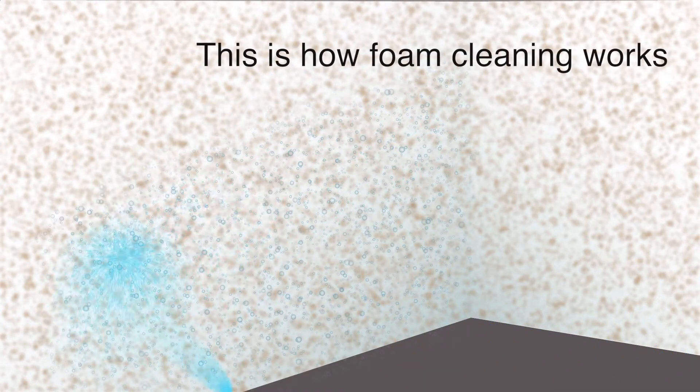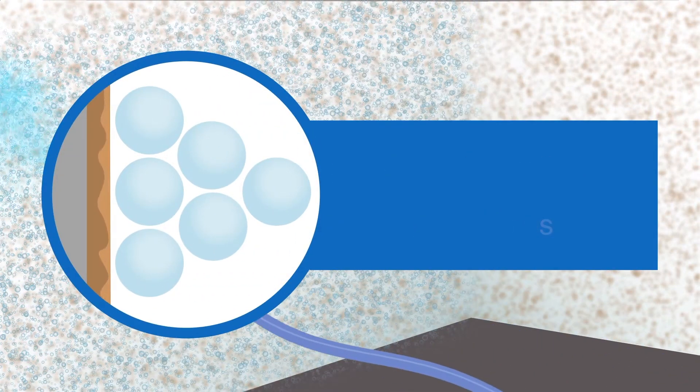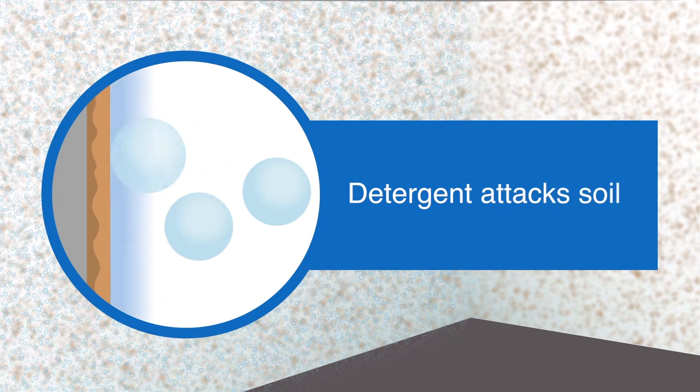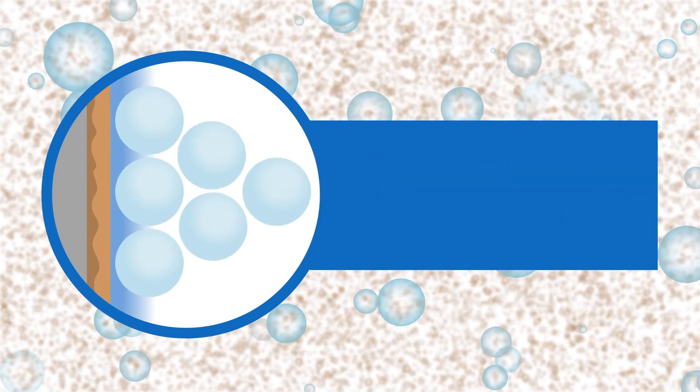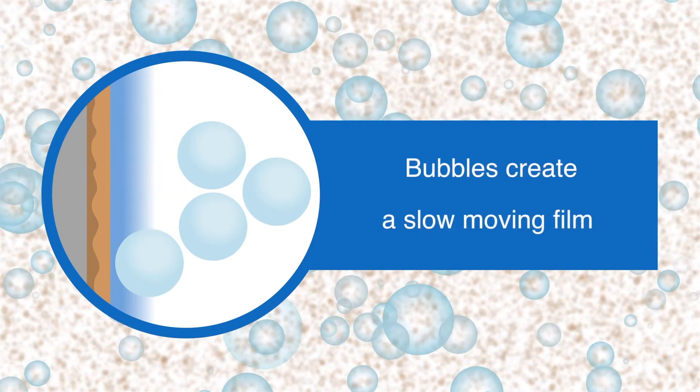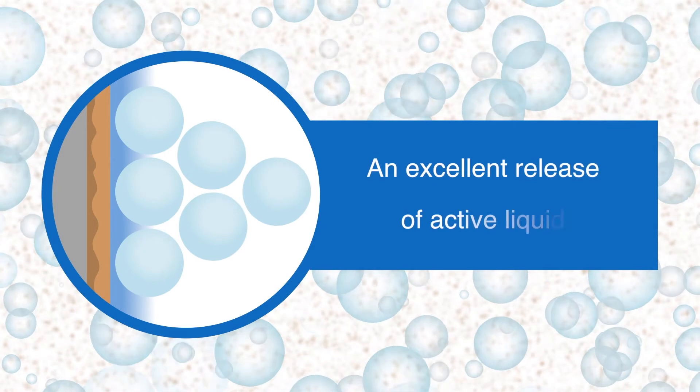How does foam cleaning work? After foam is applied to surfaces, the detergent attacks the soil and collapsing bubbles provide fluid detergent that disperses the soil. The collapsing bubbles create a slow-moving film and excellent release of active liquid.